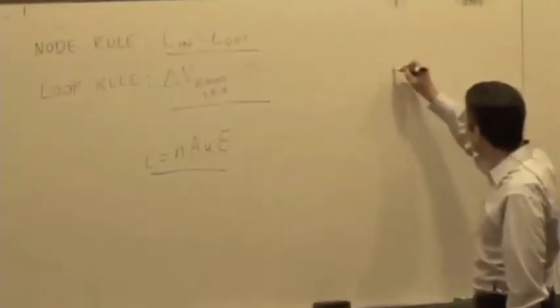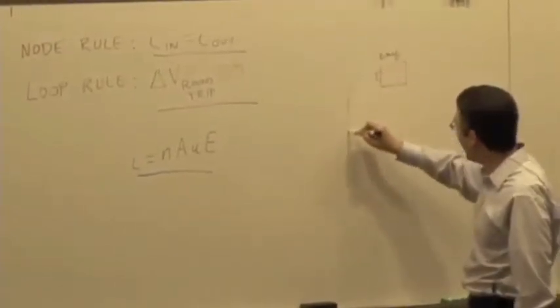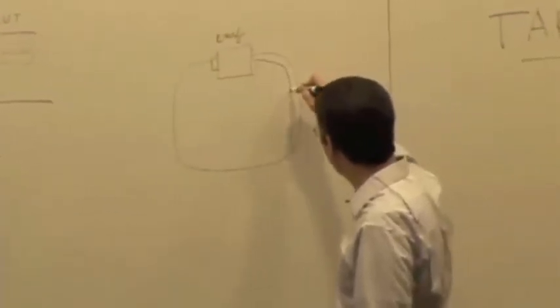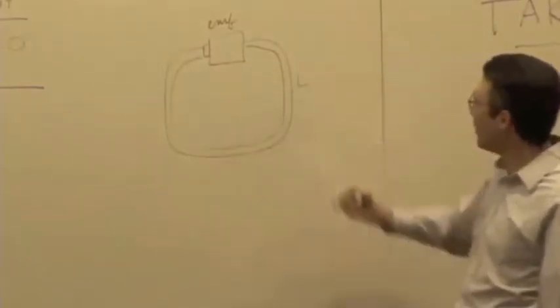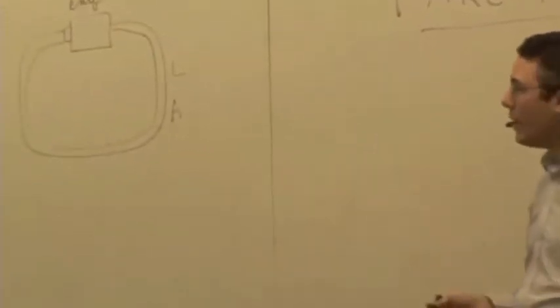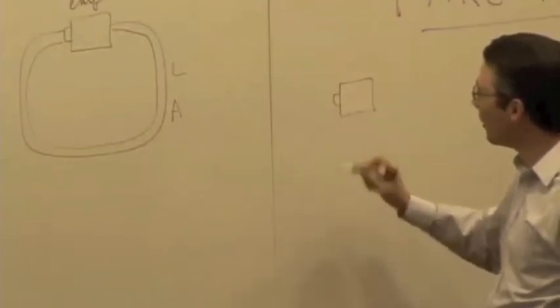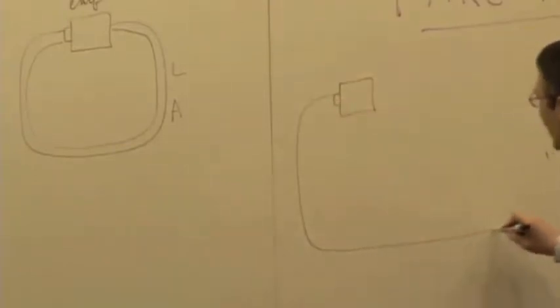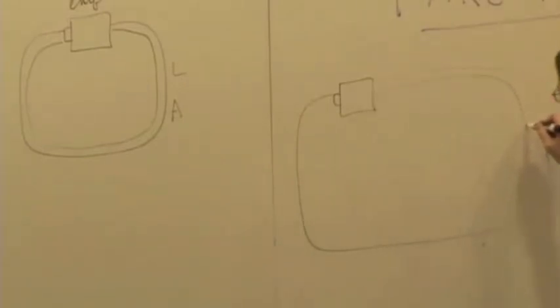Let's see if we can reason this out using these two fundamental rules. Circuit number one has some EMF value and we have a wire connected to it. I'll draw it to show some thickness in the wire. This wire has length L, cross-sectional area A, and it's nichrome. The second circuit has a wire made out of the same material.